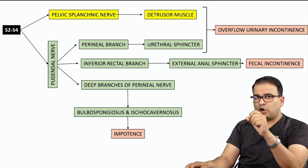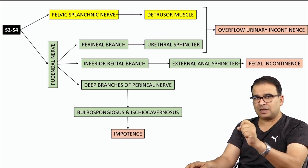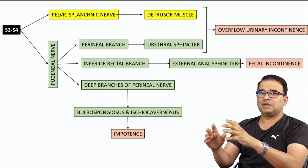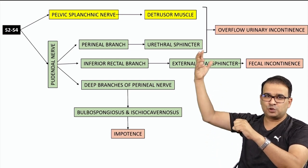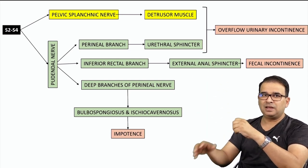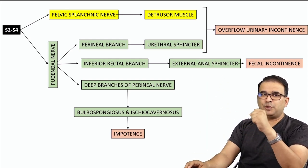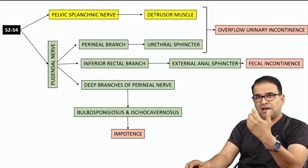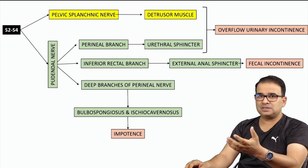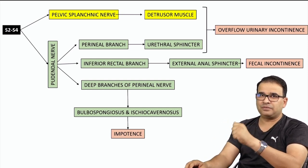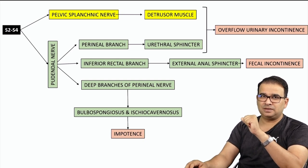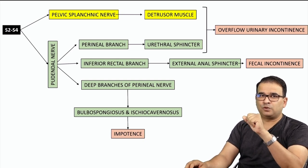Therefore, involvement of the S2, S3, S4 segments will give symptoms of pelvic splanchnic nerve involvement — such as detrusor muscle dysfunction — as well as pudendal nerve somatic symptoms, including urinary incontinence, fecal incontinence, and impotence. These will all be seen in case of conus medullaris syndrome.